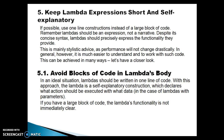The fifth point says: keep lambda expressions short and self-explanatory. The explanation says that if possible, use one-line constructions instead of a very large block of code. Remember, lambda should be an expression, not a narrative. Despite its concise syntax, lambda should precisely express the functionality they provide. This is mainly a stylistic advice as performance will not change drastically.